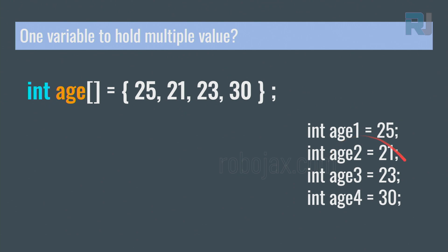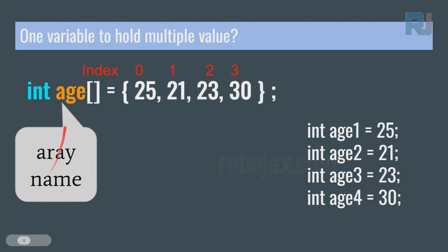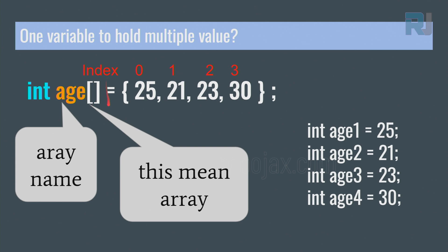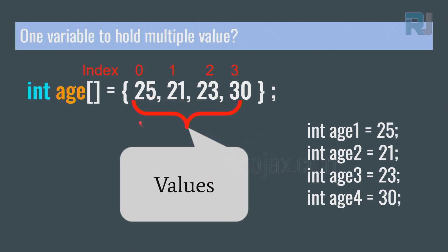We can define an array like: int age[] = {25, 21, 23, 30}. All values are inside curly braces. In terms of position, they are identified with indices 0, 1, 2, 3 — the first element is always index 0. The data type works the same as ordinary variable definitions: integer, float, char, or whatever type you need.